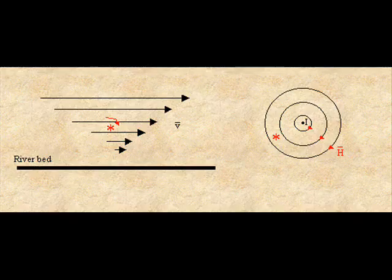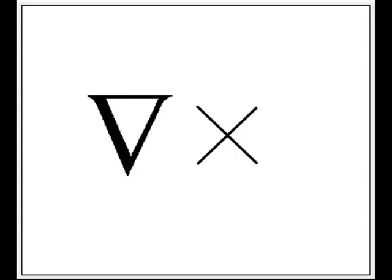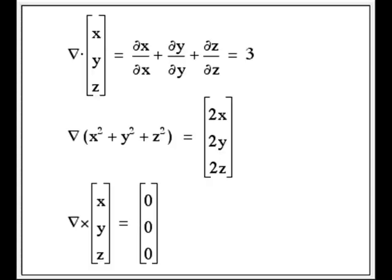The curl gives us the axis of rotation of a paddle wheel if we were to place it in the vector field and see which direction it rotated. The curl is designated by the cross product, which is the x, the delta operator followed by an x.